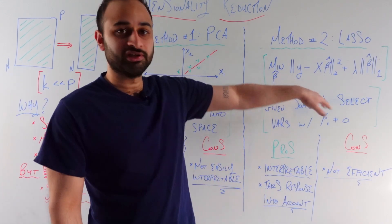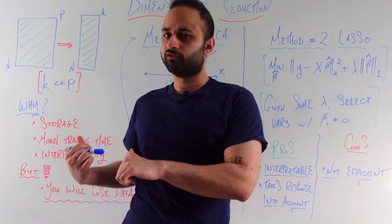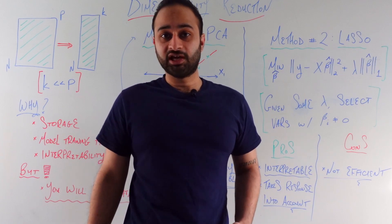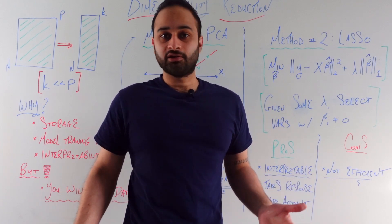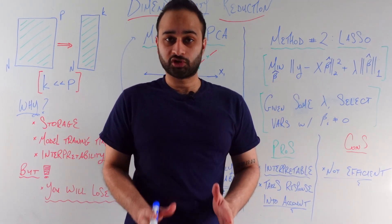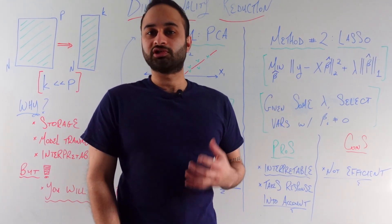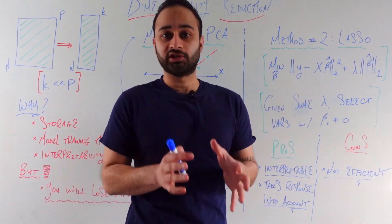And the other kind of bonus is that it takes the response into account. Notice that y is explicitly taken into account here, which is not actually true for PCA. And of course, the con here is that it's not going to be as efficient as PCA because, again, PCA was designed to compress your data in the most efficient way possible. This is simply just marking columns for deletion, so it's not going to be as efficient in compressing your data.